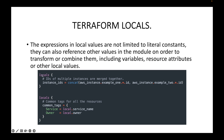In this example, I've declared two locals blocks. In the first locals block, I'm using an expression — I'm doing a concatenation, merging the instance ID of example one and the instance ID of example two. We can also call another local value within a locals block, such as local.service_name and local.owner, where the values are assigned in another locals block and then referenced here.